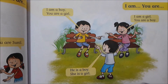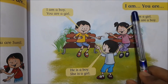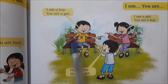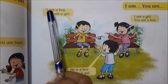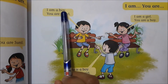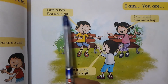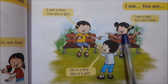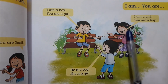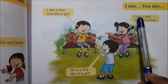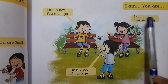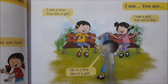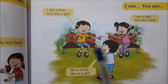Let's try a little more for I am and you are. Look at this boy. He is saying I am a boy. You are a girl, and he is pointing at her. This girl is saying I am a girl. You are a boy, and she is pointing back at him.